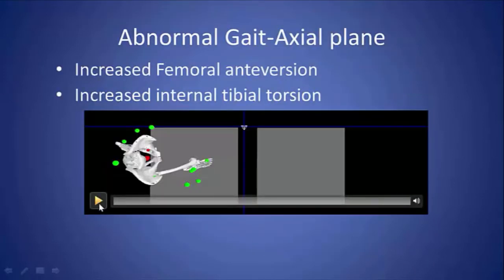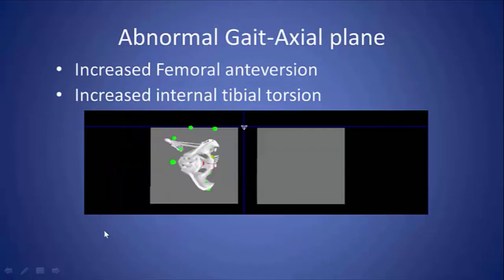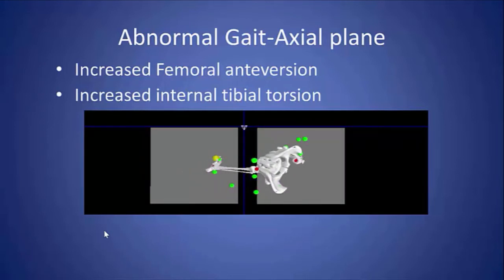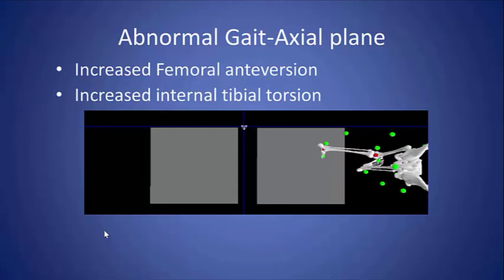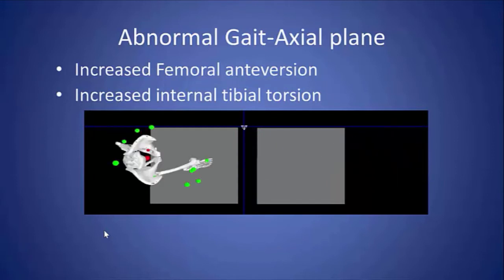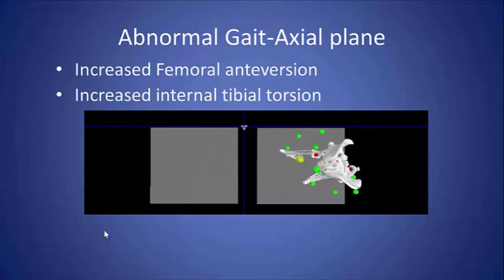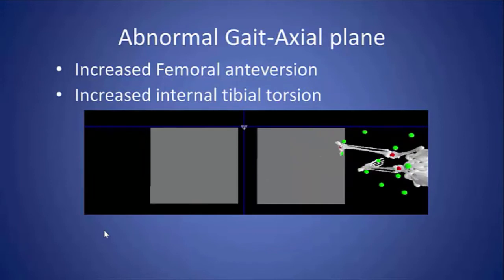You can see this on the skeleton reconstructed from her gait analysis study. You can see excessive pelvic motion, the femur on both sides is internally rotated, and the tibiae are turned in even further as a result of her internal tibial torsion.